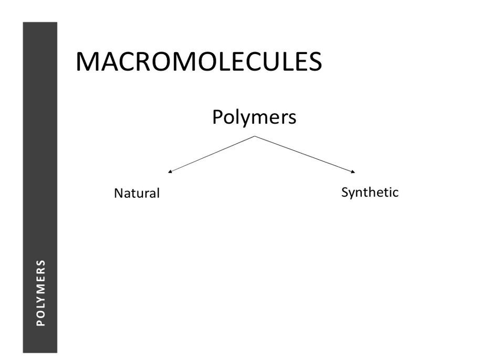There are two kinds of polymers. Natural polymers occur naturally — examples include proteins, carbohydrates, and fats. However, natural polymers are no longer in the syllabus; some very old worksheets or ten-year series may contain such questions, but we no longer focus on them. Right now we only focus on synthetic polymers, such as polyethene, which is used for plastic bags, and nylon, which is used to make cloth.